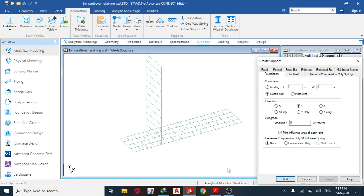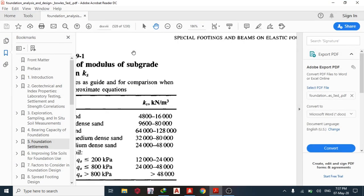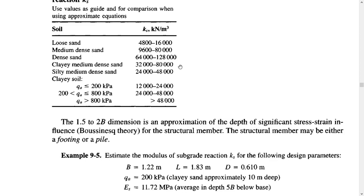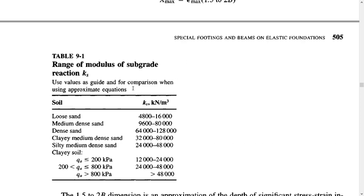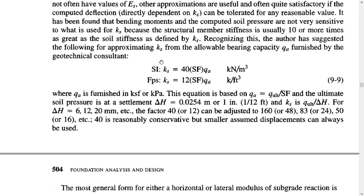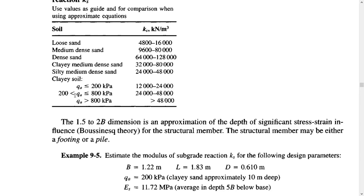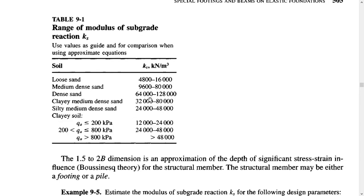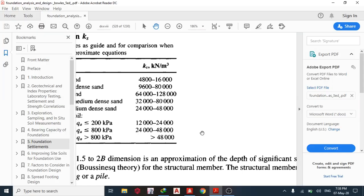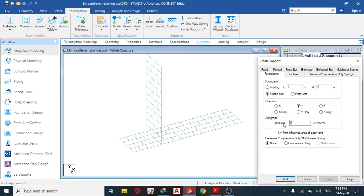To get the subgrade modulus, there are formulas, and there's also a shortcut from the textbook by Bowles — 'Foundation Analysis and Design.' You can pick a range from the table, or use the formula: 40 times factor of safety times qa (soil bearing capacity). For this case we assume dense sand, using an average value of 100,000 kN/m³. Enter 100,000 in STAAD Pro.